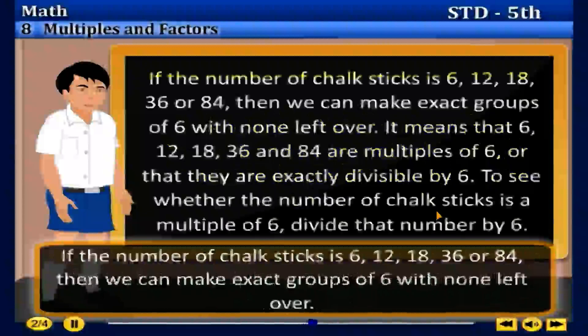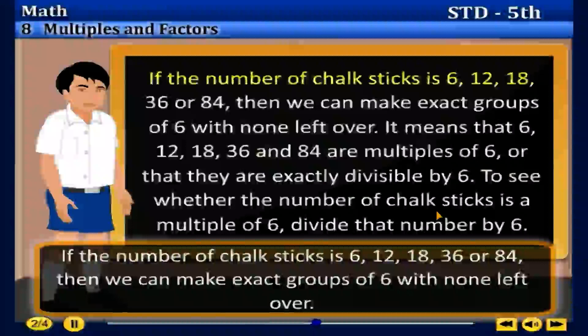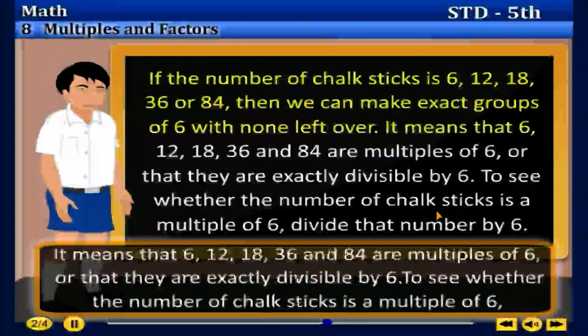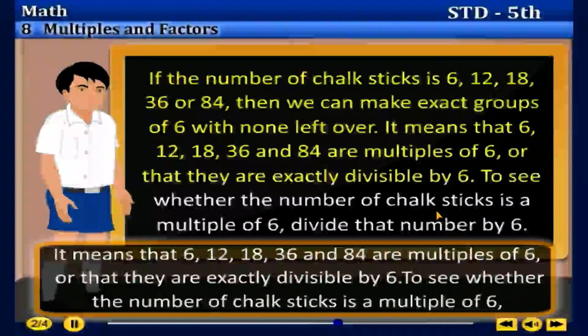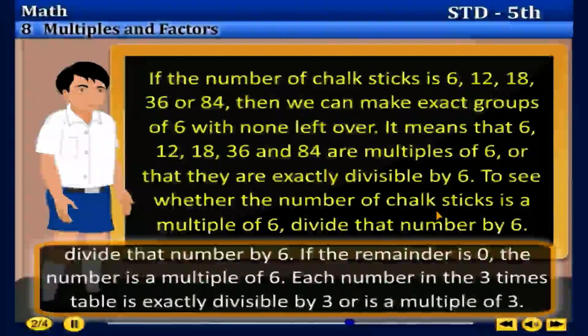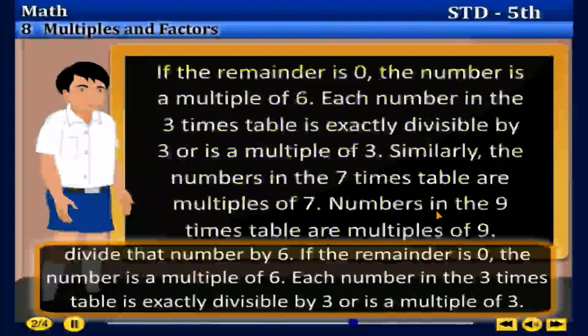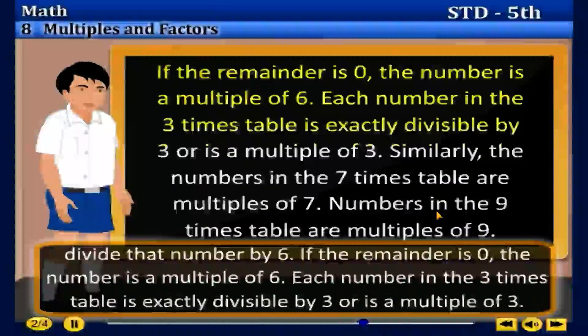If the number of chalk sticks is 6, 12, 18, 36, or 84, then we can make exact groups of 6 with none left over. It means that 6, 12, 18, 36, and 84 are multiples of 6, or that they are exactly divisible by 6. To see whether the number of chalk sticks is a multiple of 6, divide the number by 6. If the remainder is 0, the number is a multiple of 6. Each number in the 3 times table is exactly divisible by 3, or is a multiple of 3.